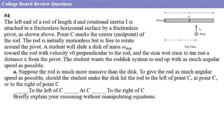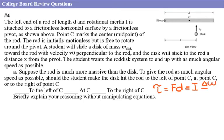The maximum torque will cause the maximum angular velocity, or maximum change in angular velocity, because torque equals force times distance — and since it's perpendicular, sine theta equals one, so torque equals F times d. This also equals inertia times angular acceleration, which is the change in angular velocity over time. So the largest torque causes the largest change in angular velocity.